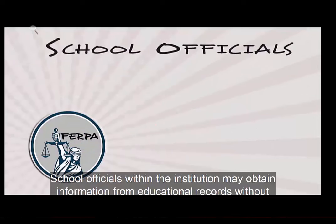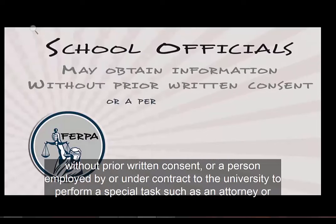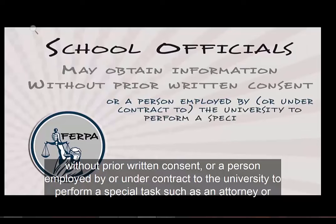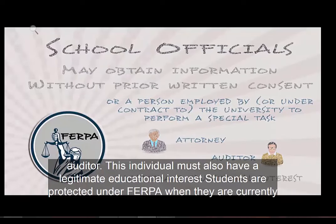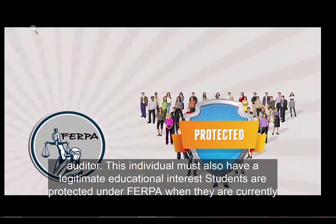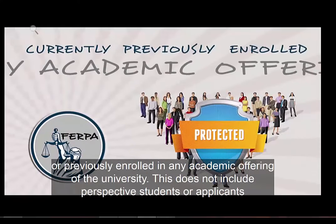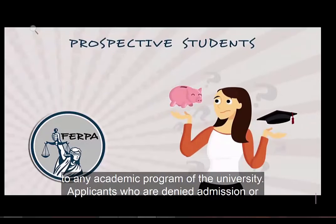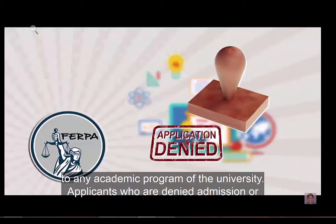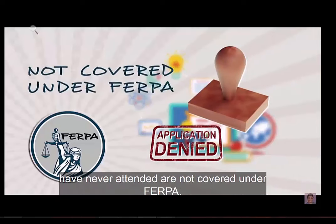School officials within the institution may obtain information from education records without prior written consent, as may a person employed by or under contract to the university to perform a special task such as an attorney or auditor. This individual must also have a legitimate educational interest. Students are protected under FERPA when they are currently or previously enrolled in any academic offering of the university. This does not include prospective students or applicants to any academic program of the university.